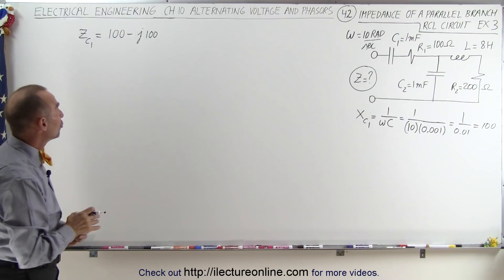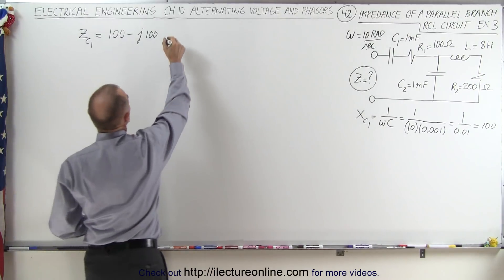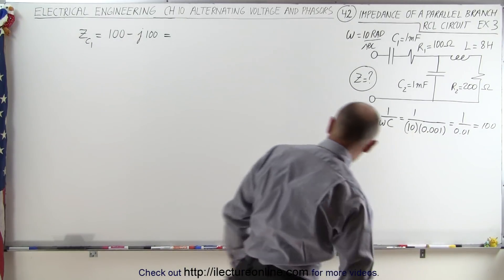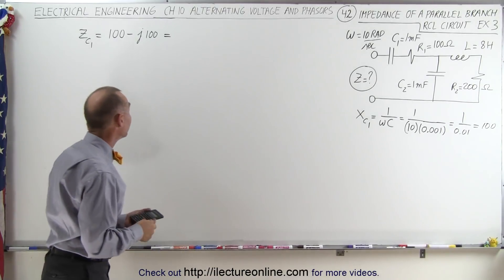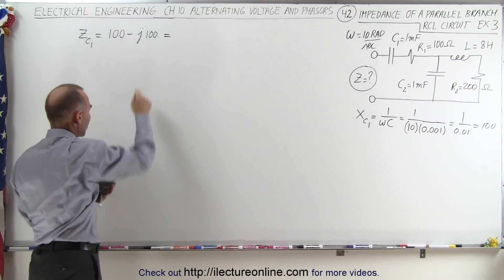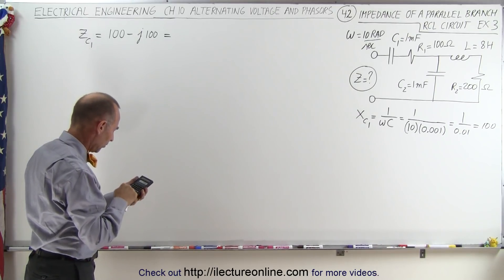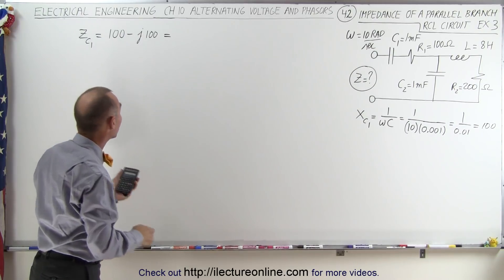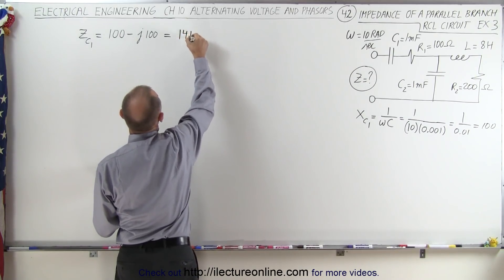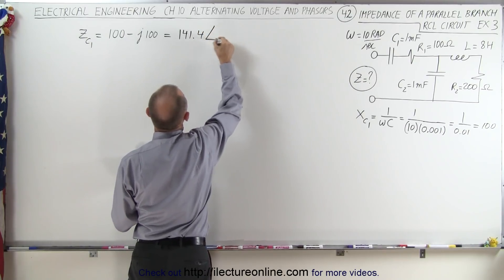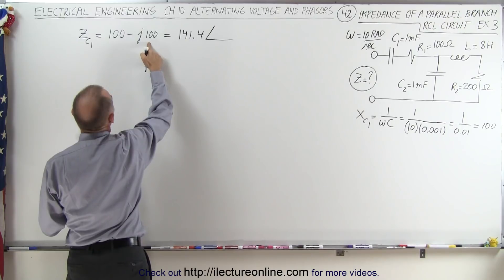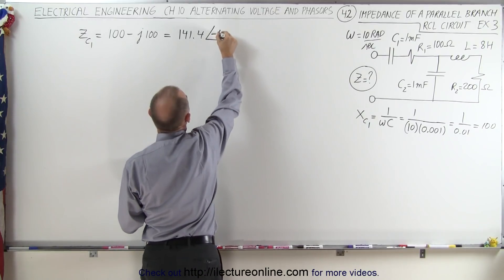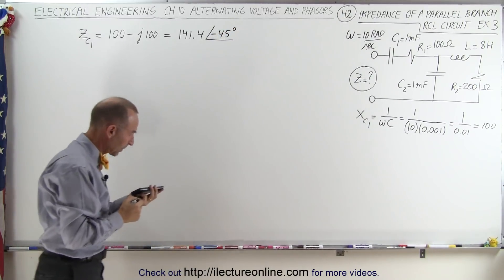Now we convert that to magnitude and phase angle. The magnitude is the square root of 100 squared plus 100 squared, which gives us 141.4. The phase angle is minus 45 degrees because the real and imaginary parts have the same amplitude but the imaginary part is negative.